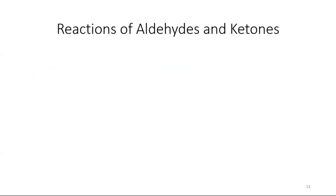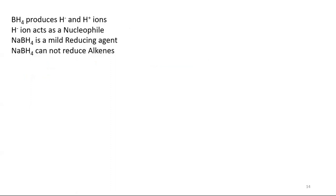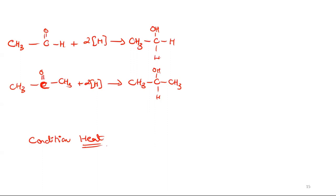Aldehydes and ketones: reduction of aldehydes produces primary alcohol. There are two methods. The first option uses sodium borohydride NaBH4 as reagent. The reaction type is reduction, nucleophilic addition reaction. BH4 produces H negative and H positive ions. H negative acts as a nucleophile. NaBH4 is a mild reducing agent. This is an example showing how aldehydes produce primary alcohol and ketones produce secondary alcohol.